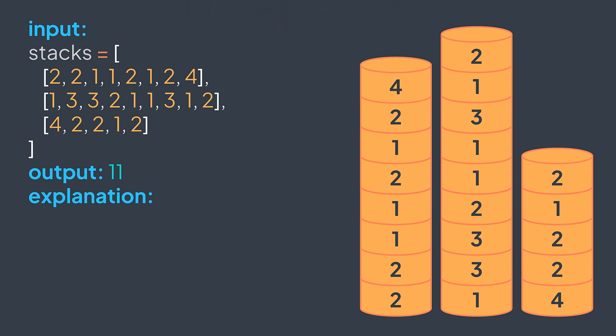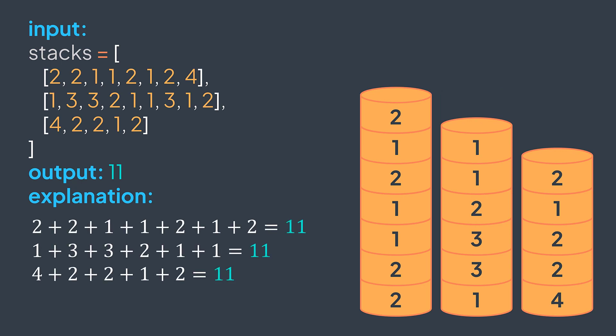For example, if we have these three stacks, we can pop one element from the first stack, four elements from the second stack, pop zero elements from the third stack. And now they have the same sum of elements. Eleven is the greatest sum that we can get.